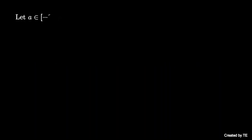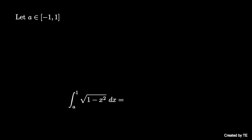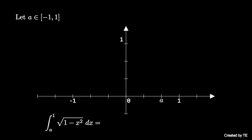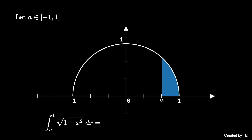Start with a real number a between minus 1 and 1. To compute the integral of the square root of 1 minus x squared between a and 1 using the fundamental theorem of calculus, you need a trig substitution and some trig identities. However, we can also remember that this integral represents the area under the square root of 1 minus x squared between x equals a and x equals 1, like this.